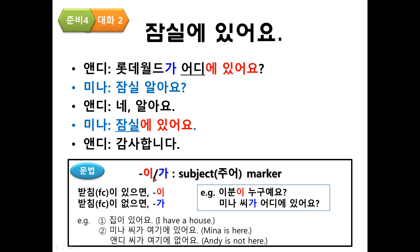Look at this grammar. We have two subject markers: 이 and 가. If there is 받침, we put 이. If there is no 받침, we put 가. The subject marker 이/가 is attached to a noun to indicate the subject of a verb or an adjective. 이 is used after words that end in a consonant — if there is 받침. While 가 is used after words that end with a vowel — if there is no 받침, we put 가.